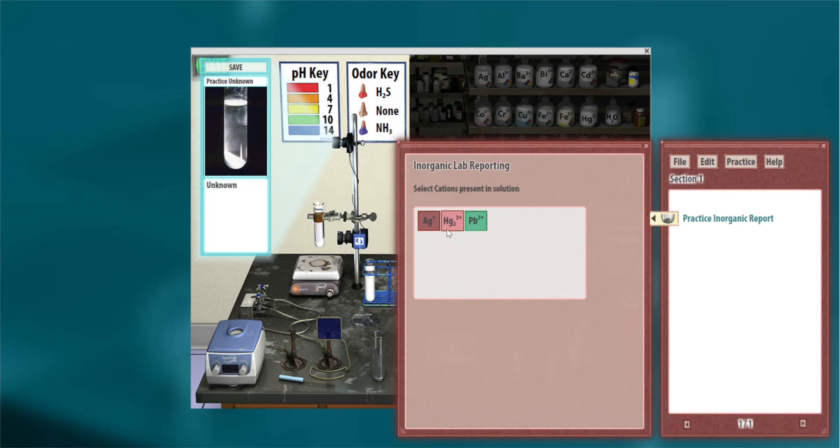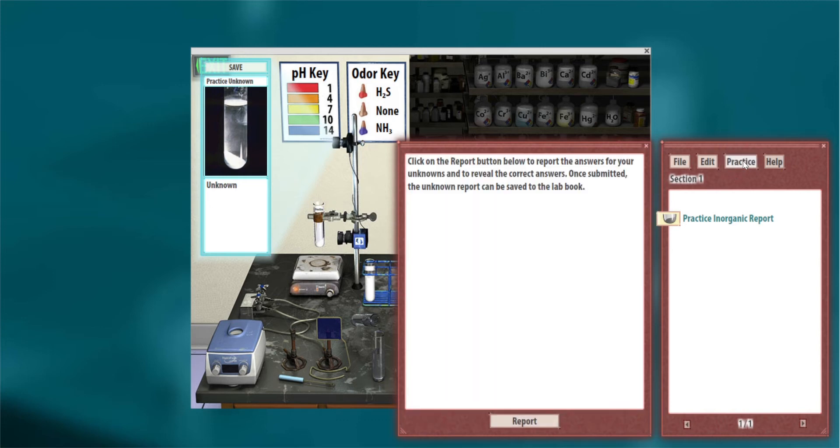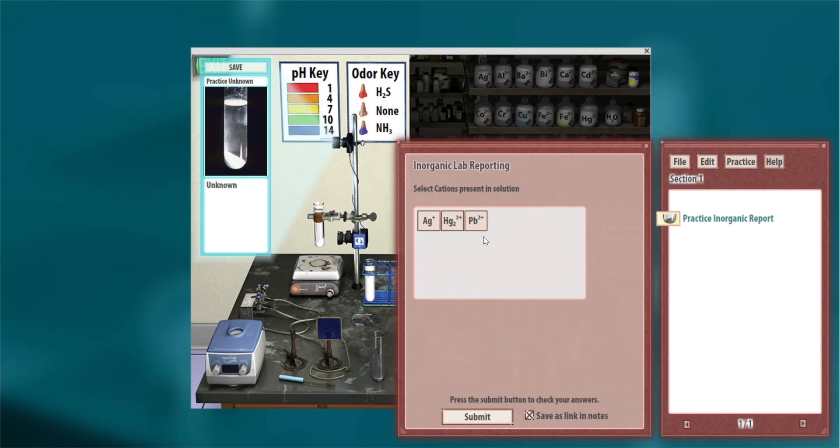They re-enter and report again with their revised answer. This time they get all green boxes, meaning they guessed correctly. They've learned how to distinguish, separate, and perform basic qualitative analysis experiments. We hope this is useful.